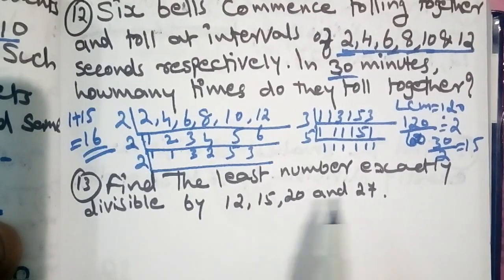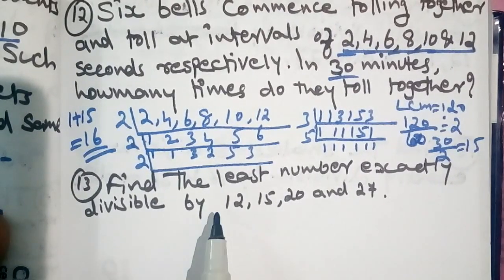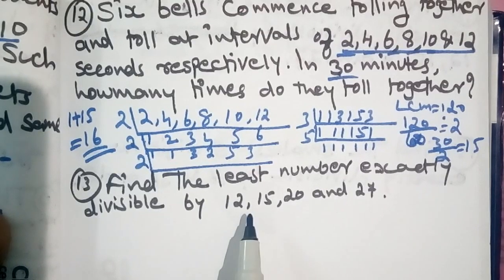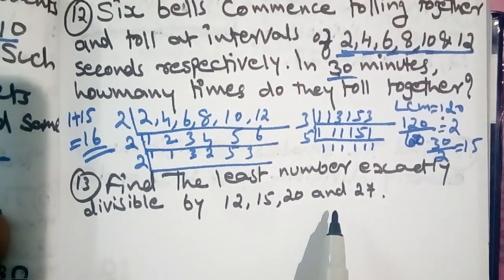Find the least number exactly divisible by 12, 15, 20, and 27.